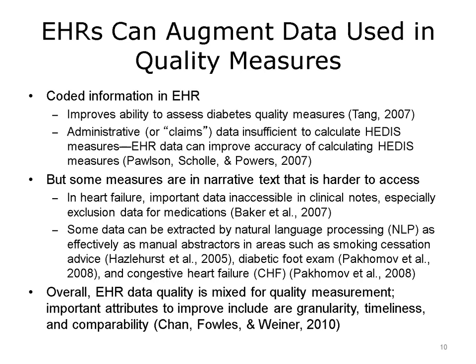Whether or not EHRs are associated with improved quality, it's clear that they can augment the data that is used in quality measures. In fact, today it's really a requirement. There certainly is great value to the coded information contained in an EHR. One analysis by Tang and colleagues found that an EHR significantly improved the ability to assess diabetes quality measures. In addition, administrative data, sometimes called claims data, alone is not sufficient for calculating, for example, health care effectiveness data and information set, or HEDIS, measures. Data from the EHR can improve the accuracy of calculating HEDIS measures, as well as calculating metrics such as disease-specific mortality.